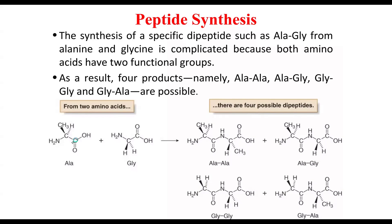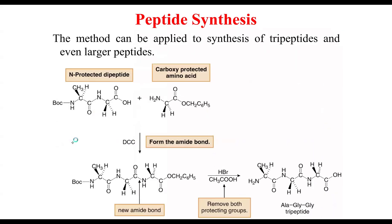In peptide synthesis, you start, test to see if you get the desired product, then repeat until you achieve it. This method can be applied to synthesize tripeptides and even larger ones. You can protect the nitrogen or use carboxyl-protected amino acids to guide the synthesis. You can synthesize dipeptides, tripeptides, and more, though it remains complicated due to the nature of the functional groups.